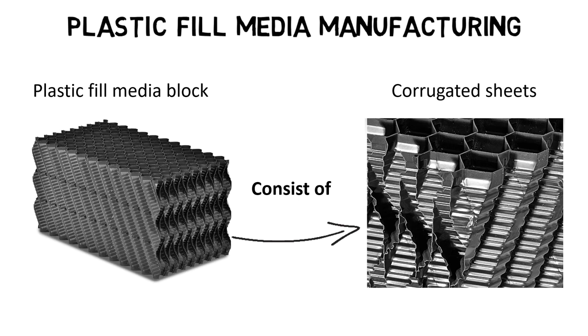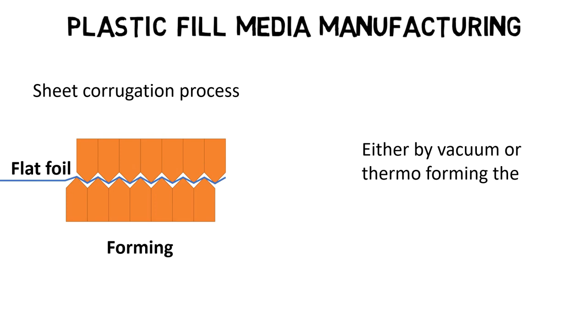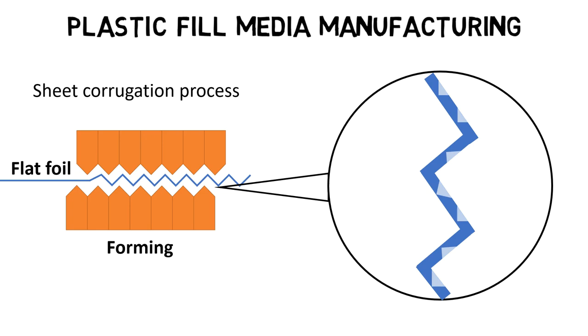Plastic fill media blocks consist of corrugated sheets usually made of PVC or polypropylene material. Either by vacuum or thermoforming, the corrugation is pressed into a flat plastic sheet. In detail, you can see a corrugation structure within the main corrugation.